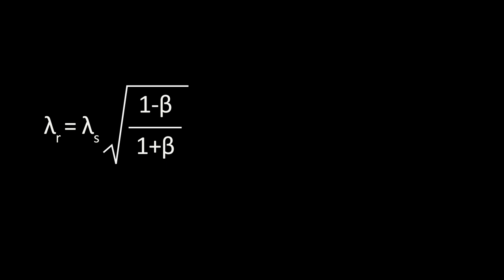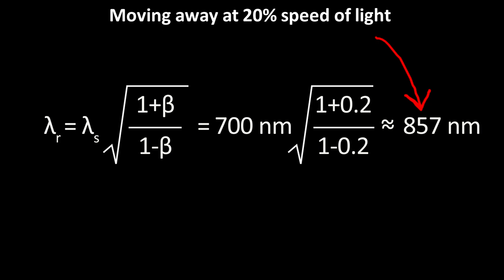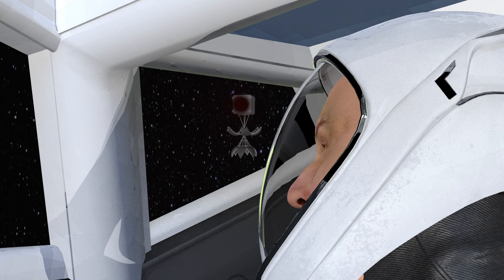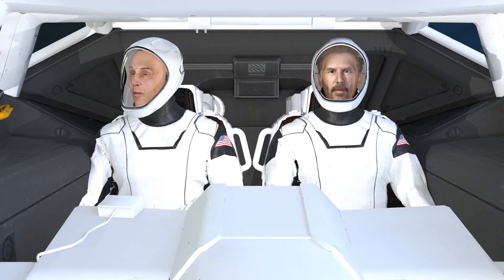We can use a similar formula to figure out the color of the light we would observe from the back window. The equation is the same, but the signs change. Lambda r in this case would be 857 nanometers, which is in the infrared range. So in this case, we would not see the red light at all because our eyes can't detect infrared light. So the traffic light would just appear to be non-functional or broken.